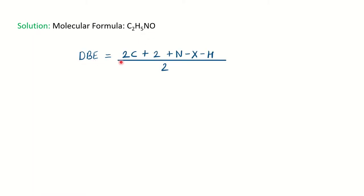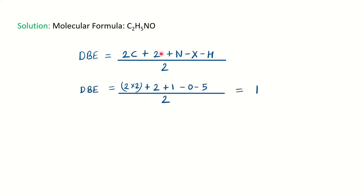The first step is to calculate the DBE — double bond equivalence — which tells us how much unsaturation is present in the molecule. The formula is: DBE = (2C + 2 + N − X − H) / 2. With C=2, N=1, X=0, H=5, we get DBE = 1. So the molecule has one unsaturation and is aliphatic, not aromatic — aromatic compounds need at least four unsaturations for the benzene ring.